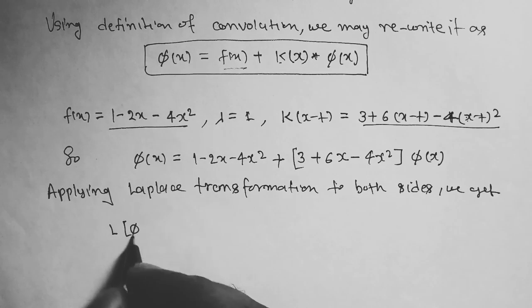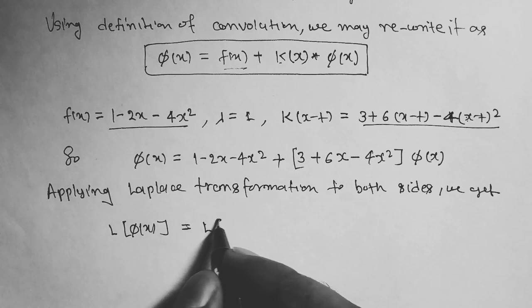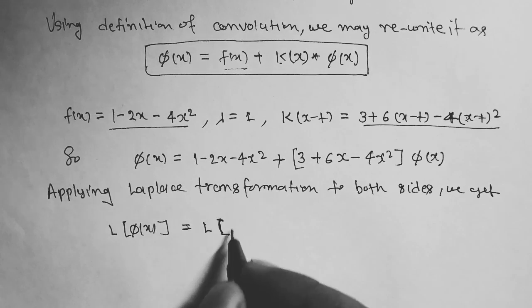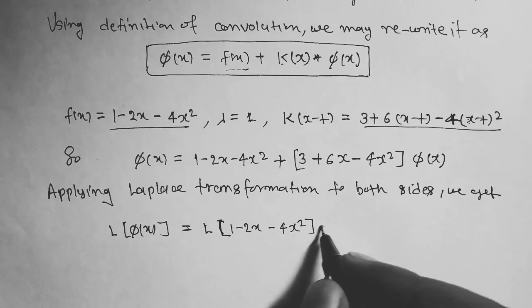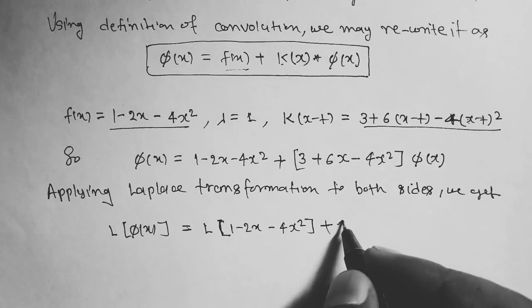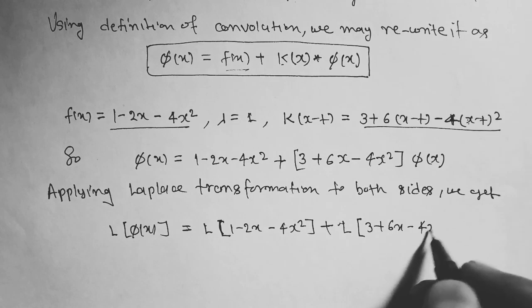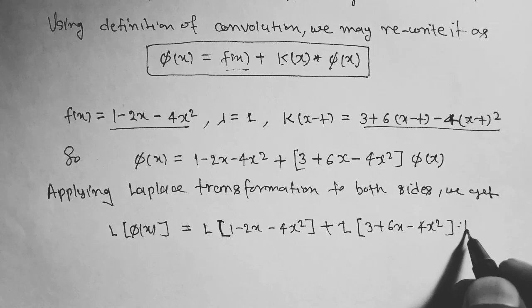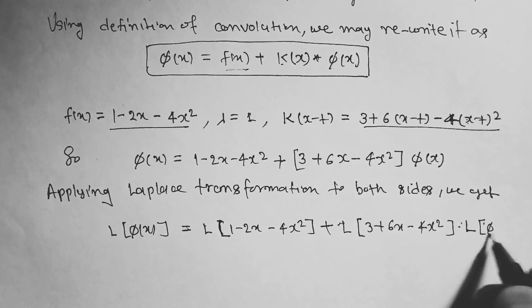L[φ(x)] = L[1 - 2x - 4x²] + L[3 + 6x - 4x²]·L[φ(x)].